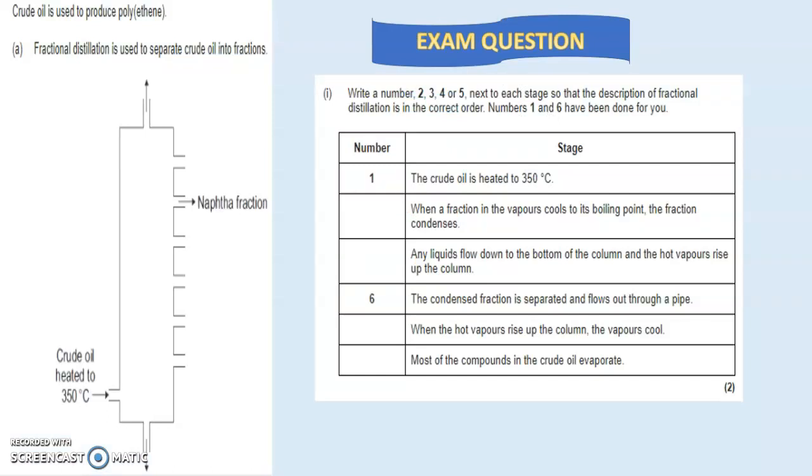Let's look into an exam question. Crude oil is used to produce polyethene—that's one of the byproducts. We'll look in another video at how you can go from crude oil to obtaining long chain polymers. So far we've just gone from crude oil to get hydrocarbon separation into fractions. We'll study alkenes and polymers in another video. You've got this column here showing where naphtha is coming out. Write a number 2, 3, 4, or 5 next to each stage so that the description of fractional distillation is in the correct order. Number 1 and 6 have been done for you.